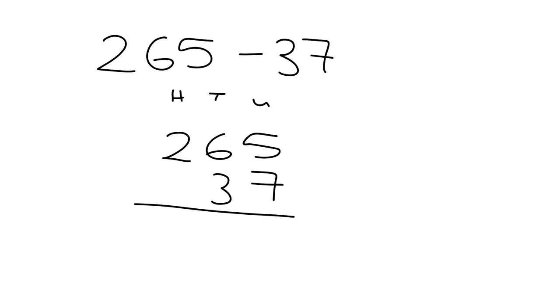These are hundreds, tens, units. Just have a look here quite carefully. You see that we made sure that all the units, the 5 and the 7, are in exactly the same column. And the tens, the 6 tens and the 3 tens here, they're all lined up nicely in the same column so that you keep everything straight and then it's easy to do.